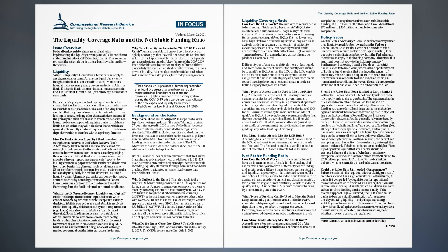Liquidity Coverage Ratio. How does the LCR work? The rule aims to require banks to hold enough high-quality liquid assets (HQLA) to match net cash outflows over 30 days in a hypothetical scenario of market stress where creditors are withdrawing funds. An asset can qualify as HQLA if it has lower risk, has a high likelihood of remaining liquid during a crisis, is actively traded in secondary markets, is not subject to excessive price volatility, can be easily valued, and is accepted by the Fed as collateral for loans. HQLAs must be unencumbered—for example, they cannot already be pledged as loan collateral. In the LCR, eligible assets are assigned to one of three categories, with the most liquid assets given more credit and the least liquid given less credit.